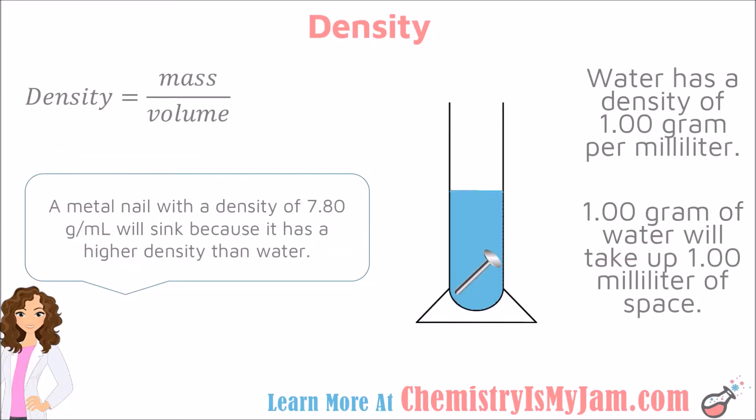One example of a physical property is density. You can calculate density by taking the mass of a substance and dividing it by the volume. Water has a density of 1 gram per milliliter. If something has a density that is higher than that, it will sink in water. For example, this nail has a density of 7.8 grams per milliliter, meaning that when it is dropped into water, it will sink.